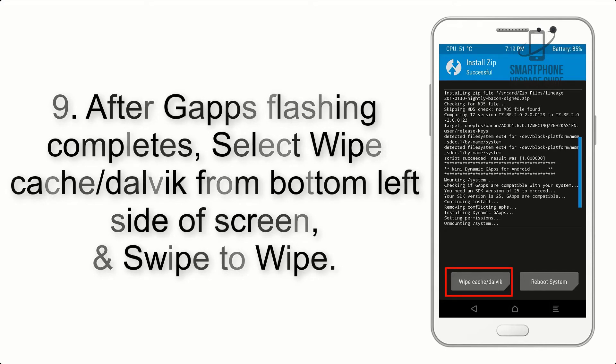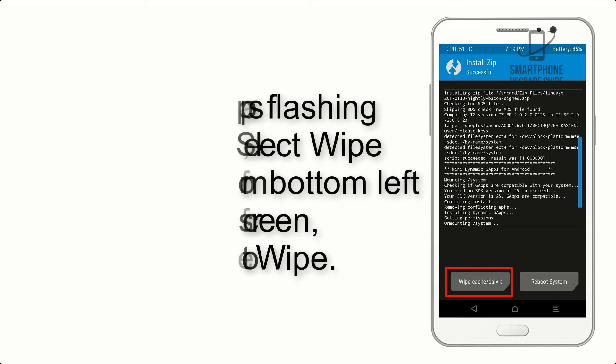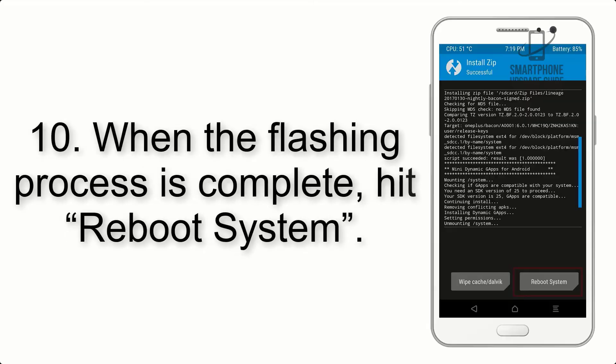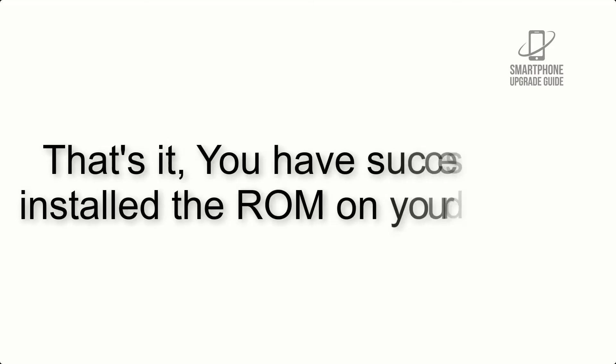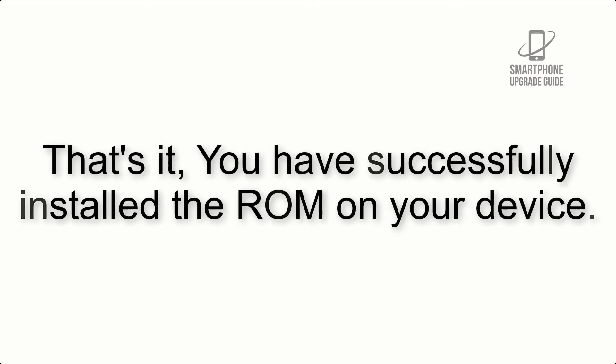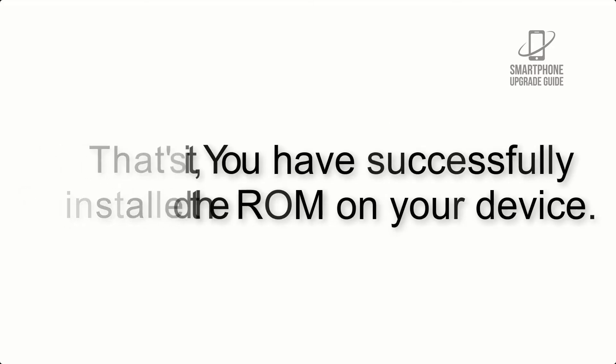Step 9: After GApps flashing completes, select Wipe Cache and Dalvik from the bottom left side of the screen and swipe to wipe. Step 10: When the flashing process is complete, hit Reboot System. That's it — you have successfully installed the ROM on your device.